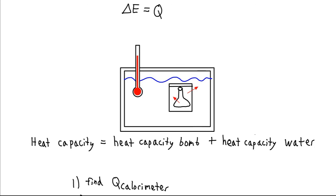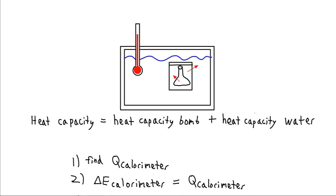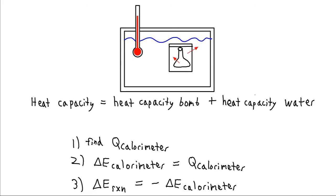We find Q for the entire calorimeter system — the heat that goes into it. Then the change in energy of the calorimeter equals Q, since no work is done. Finally, the change in energy of the reaction equals minus the change in energy of the calorimeter, by conservation of energy.